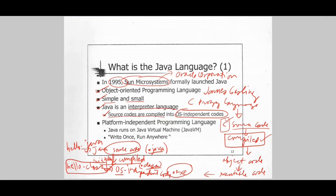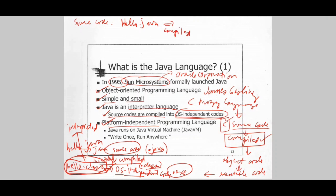It is called OS independent code because hello.class can be executed or interpreted on any platform. The result of the initial compilation — hello.class — is called OS independent code, and it is platform independent. From that point on, it is interpreted. So the source code hello.java is initially compiled and the result is the file hello.class.